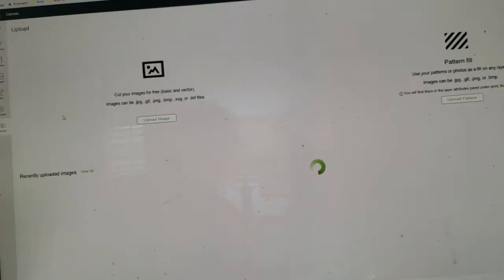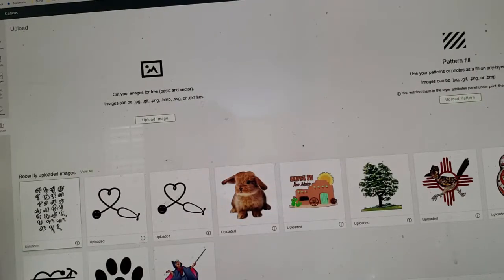I'm in the Cricut Design Space. I have downloaded that font and I'm going to go over here to upload. That's where I put them and it's right down here. So we'll click it and hit insert images.